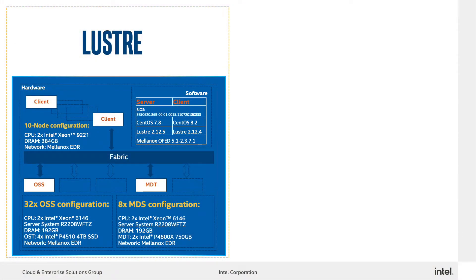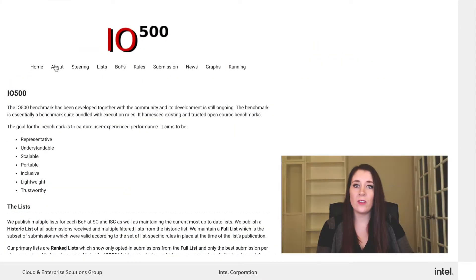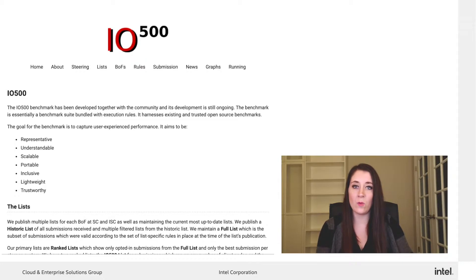For this comparison, each installation has been designed to be optimal for the respective technology. Here on the left, you can see the configuration of the Endeavor Lustre file system and Deos on the right. The size of the installations is comparable, with Lustre having 32 OSS and 8 MDS compared to 16 Deos nodes. To demonstrate the Deos advantage, we're using a subset of the IO500 test suite, which includes an industry-standard set of benchmarks, MDTest and IOR.